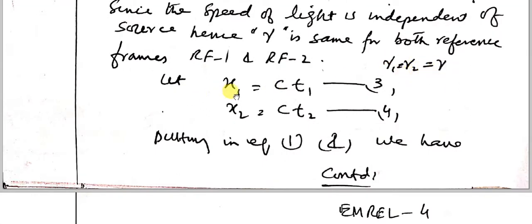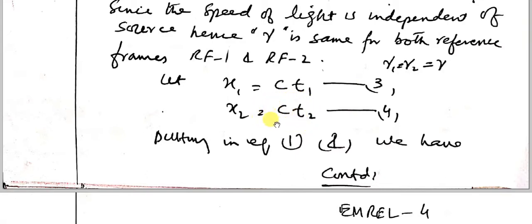Let x1 be the distance traveled as observed by observer 1, given by c·t1 — the time taken for that event moving with velocity c. Similarly, x2 will observe the event as c·t2 — the amount of time taken by that event.